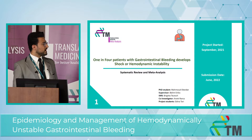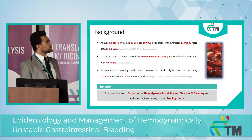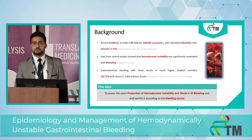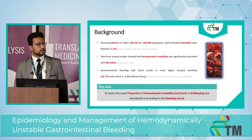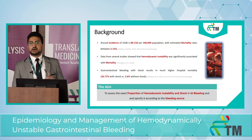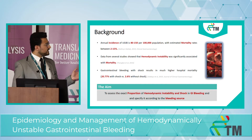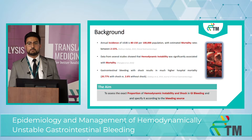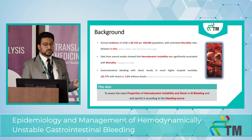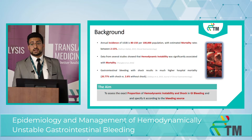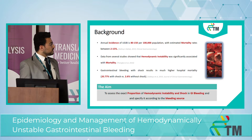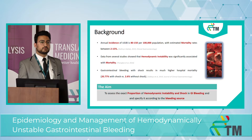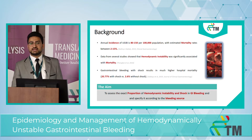As background, the incidence of GI bleeding is unacceptably increasing — around 100 per 100,000 population annually — with an estimated mortality up to 15 percent. Many studies showed a significant association between hemodynamic instability and mortality. A study published in 2019, a 12-year national analysis for U.S. patients, concluded that gastrointestinal bleeding with shock results in a much higher hospital mortality than without shock.